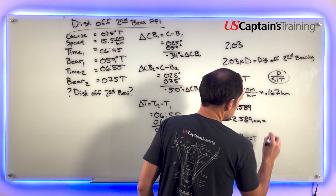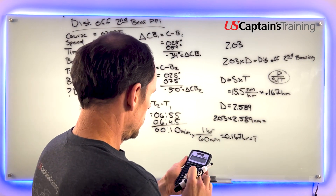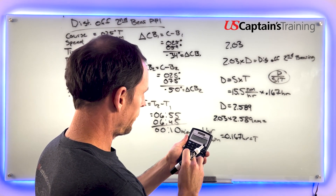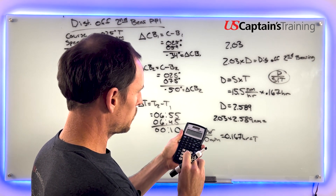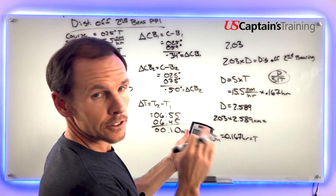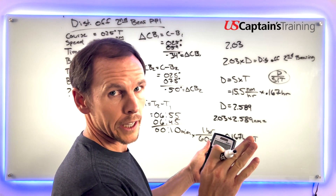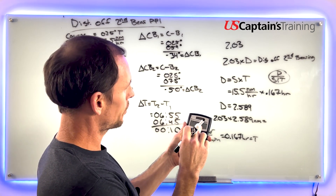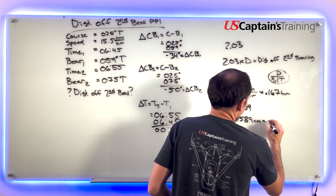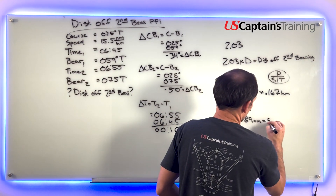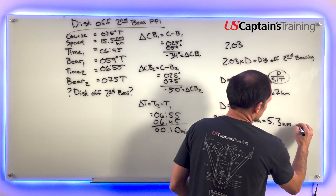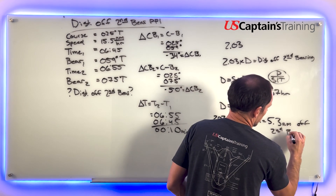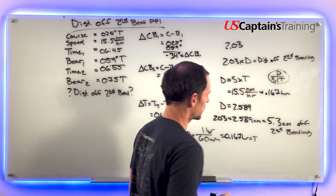2.03 times 2.589 nautical miles equals 5.255, which we round to one decimal place: 5.3 nautical miles off the second bearing. That is the right answer.